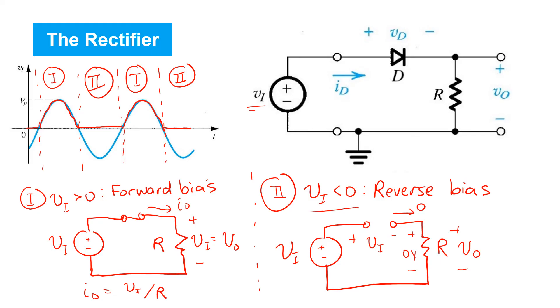So you end up with the red waveform shown there. It's called the rectified version of the input vi. And you see only the positive half cycles appear at the output. This can be very useful because the input voltage signal vi applied had zero dc content.